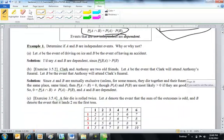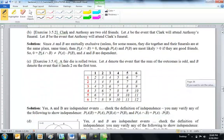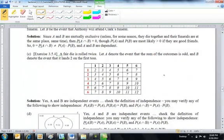So I think the ones I explained up there are pretty clear. I mean, things like this with the die, it's hard to tell. Let me see, like this one, a fair die is rolled twice. Let A be the event that the sum of the outcomes is odd and B be the event that it lands on two on the first toss.